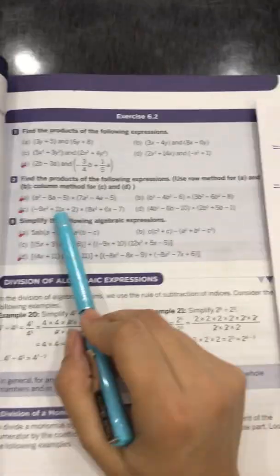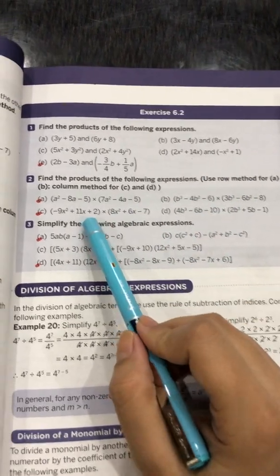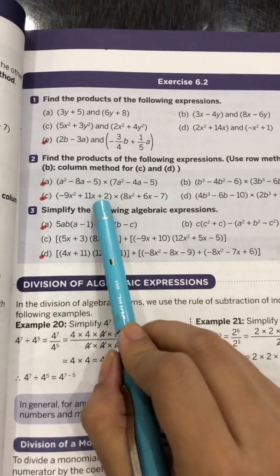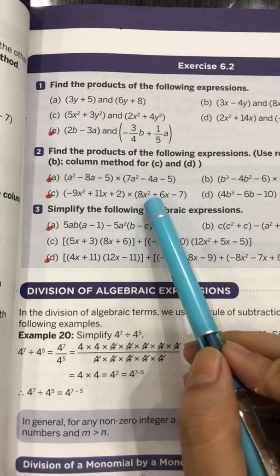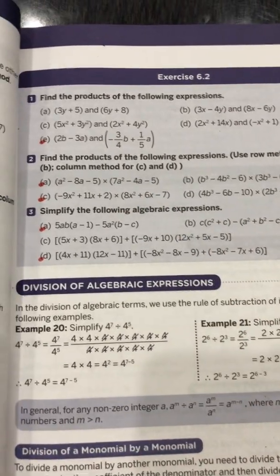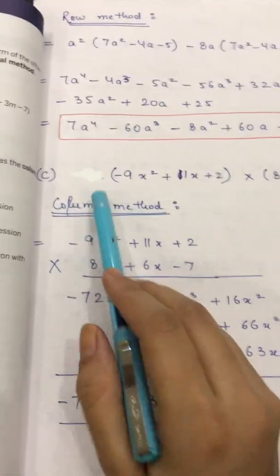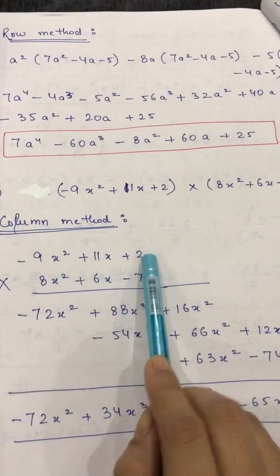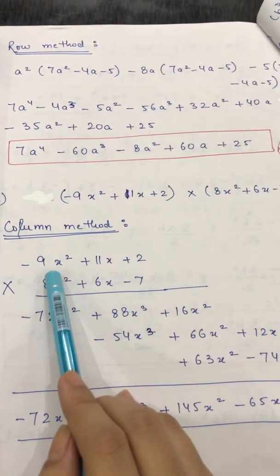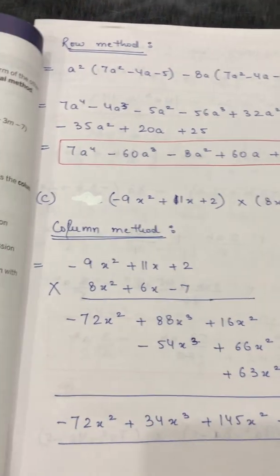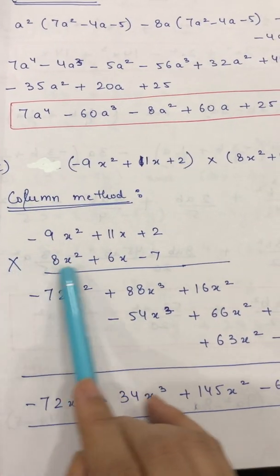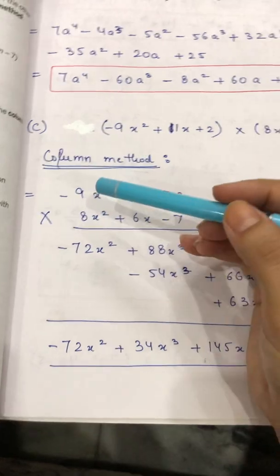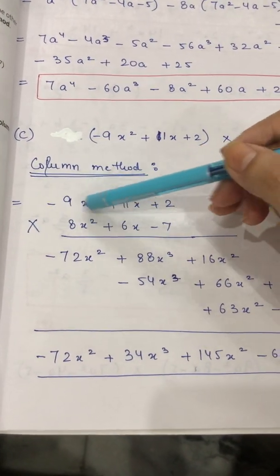Parts C and D use the column method. For part C, the expression is −9x² + 11x + 2 multiplied by 8x² + 6x − 7. Write the first expression, then write the second expression underneath it, and put a multiplication sign because you are calculating the product. Draw a line below, just like in regular multiplication.